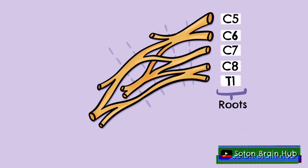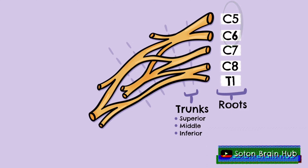Moving slightly more distally, these roots form trunks. The C5 and C6 roots join together to form the superior trunk. Likewise, the C8 and T1 roots join together to form the inferior trunk. Unlike the other roots, the C7 root continues on its own to form the middle trunk.